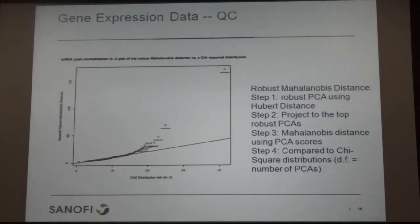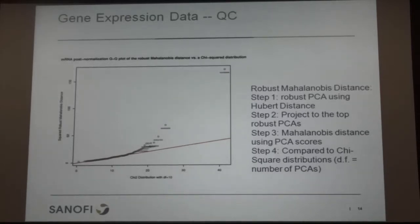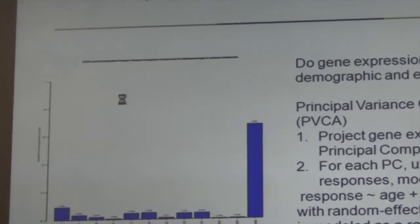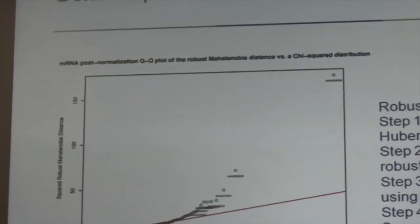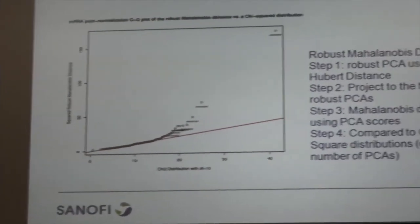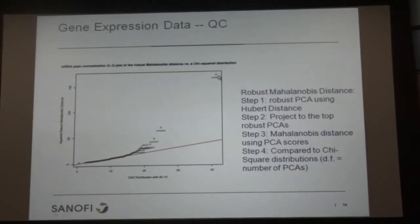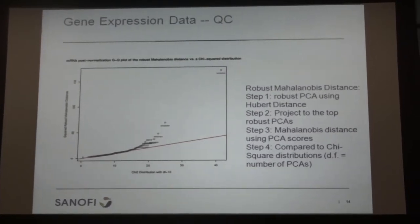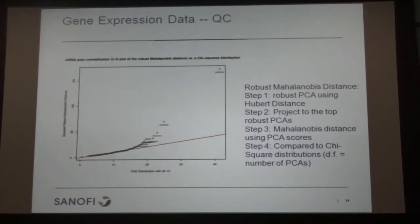We make a QQ plot: the x-axis is the theoretical chi-square distribution with degree of freedom 10 — the number of principal components kept — and the y-axis is the quantile from the observed data. A big deviation suggests those data points may be outliers. The top point shows a really large deviation from the theoretical chi-square distribution, and this turns out to be the same subject we identified in the previous QC analysis.